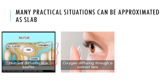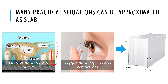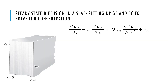Another example is how oxygen diffuses through a contact lens and how the amount depends on thickness or the diffusion coefficient. These situations can be approximated as diffusion through a slab where we have high concentration on one side and low concentration on the other side. If we can find the amount diffused through this slab, we can answer these practical situations.